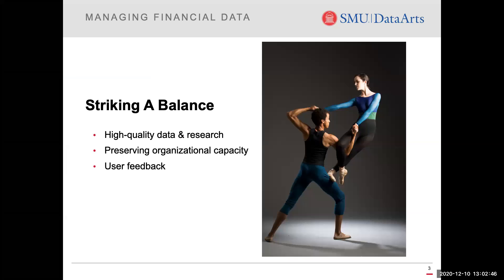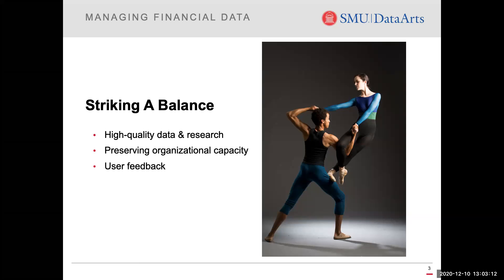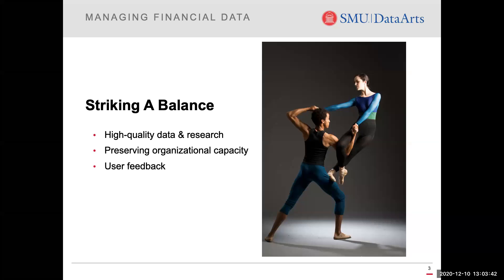We've been talking throughout the series about our intentions to strike a balance between the benefits of data and the capacity needed to track and collect it. As we made decisions during the streamlining process, we considered the benefits of each data point in terms of research, insights, and advocacy, balancing those against the time and effort required to collect and report on them. We depended on feedback from our users to get this balance right. One thing we heard most consistently is a desire to add context and explanations to data and reports to funders, so we're implementing that feature in the new streamlined survey.